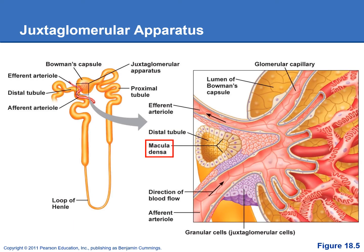As a reminder, the macula densa cells are part of the wall of the distal convoluted tubule, sensing the amount of salt in the filtrate. If blood pressure is too high, we end up with too much salt because we're filtering out too much plasma. The macula densa cells then secrete a vasoconstrictor that talks to the smooth muscle around the afferent arteriole, telling it to constrict. That decreases blood flow into the glomerulus, decreasing blood pressure and GFR, so less filtrate is produced.